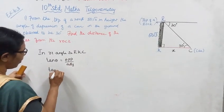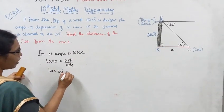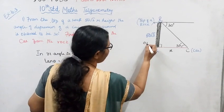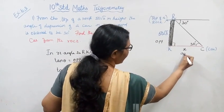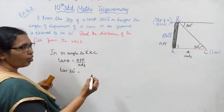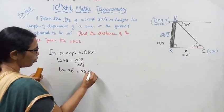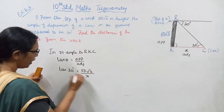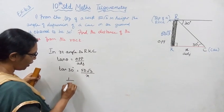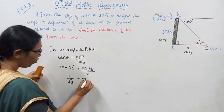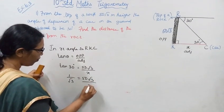So tan(30 degrees) equals opposite over adjacent. The opposite side is 50√3 and adjacent is x. Therefore, tan(30) = 50√3 / x. We know that tan(30) = 1/√3, so 1/√3 = 50√3 / x.